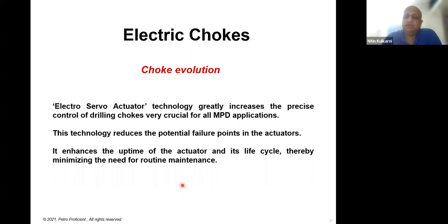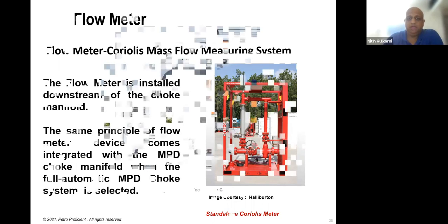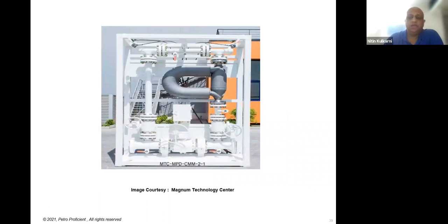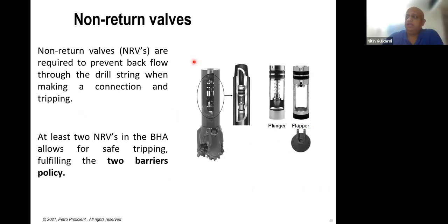The Coriolis flow meter — physically this is how it looks when mounted in a manifold. There are non-return valves that are frequently used in any MPD operation. They are usually installed in the drill string — one right above the bit and one higher up in the drill string. These prevent backflow through the drill string while making connections. If by any chance you're underbalanced, the RCD takes care of the annulus, but the drill string also needs to be addressed — this is done using the non-return valve. This is not only used in MPD but also in conventional drilling.